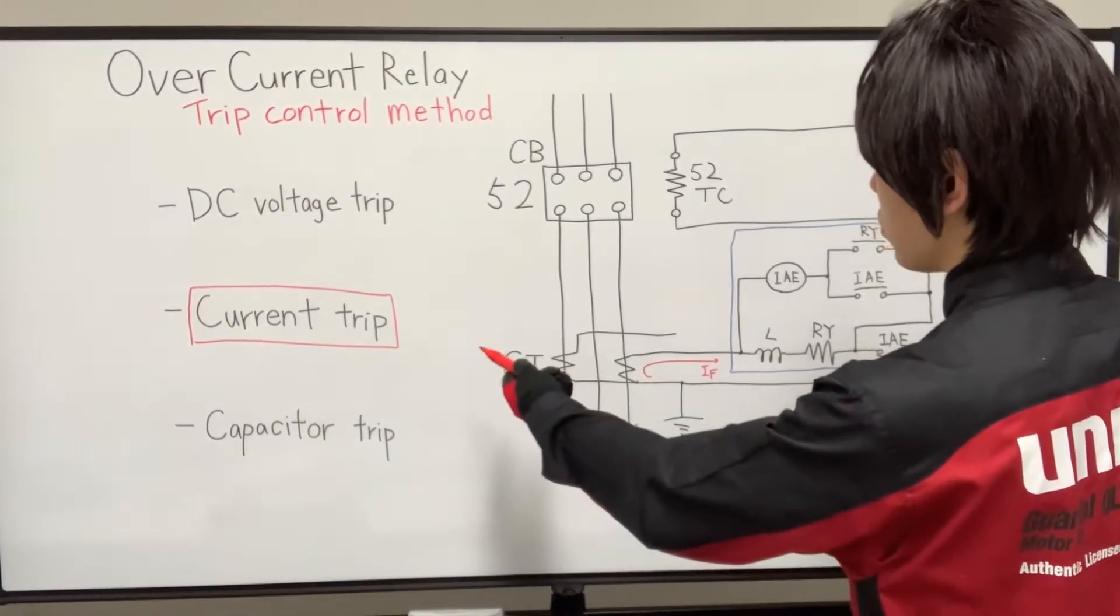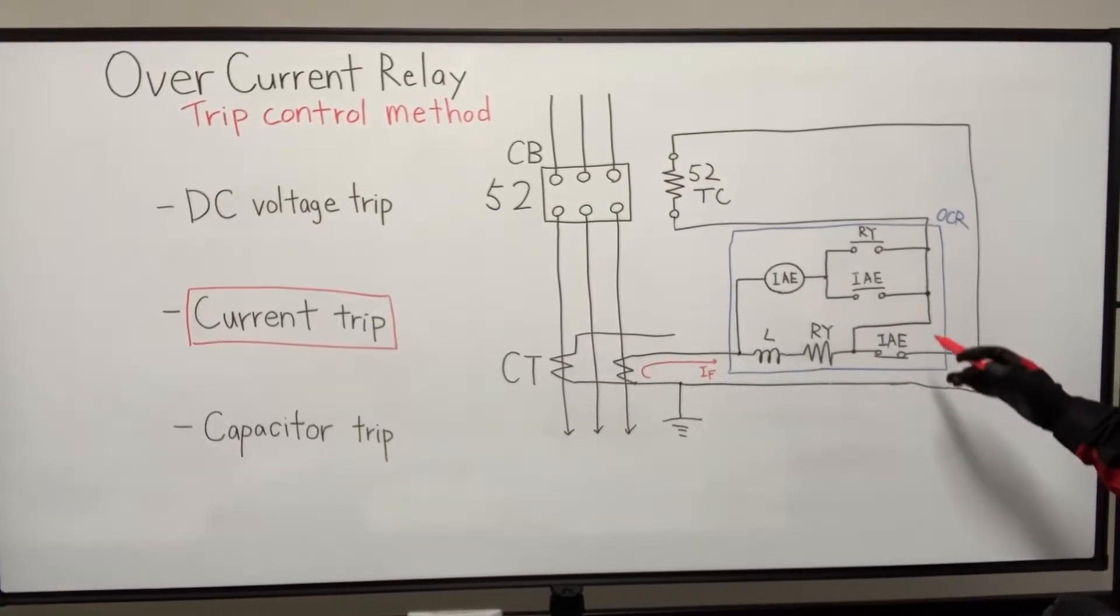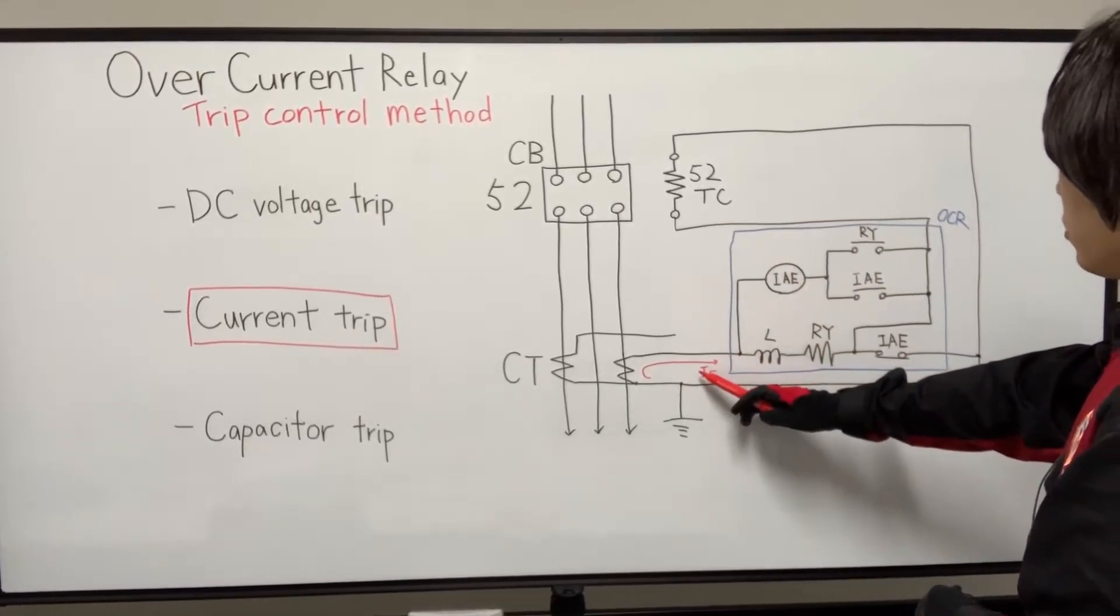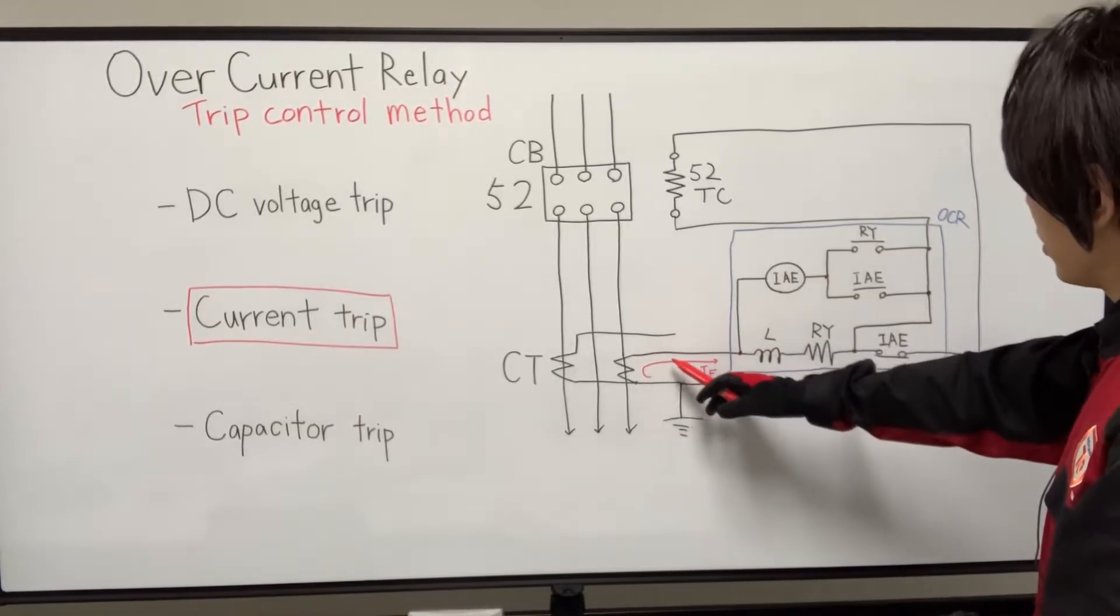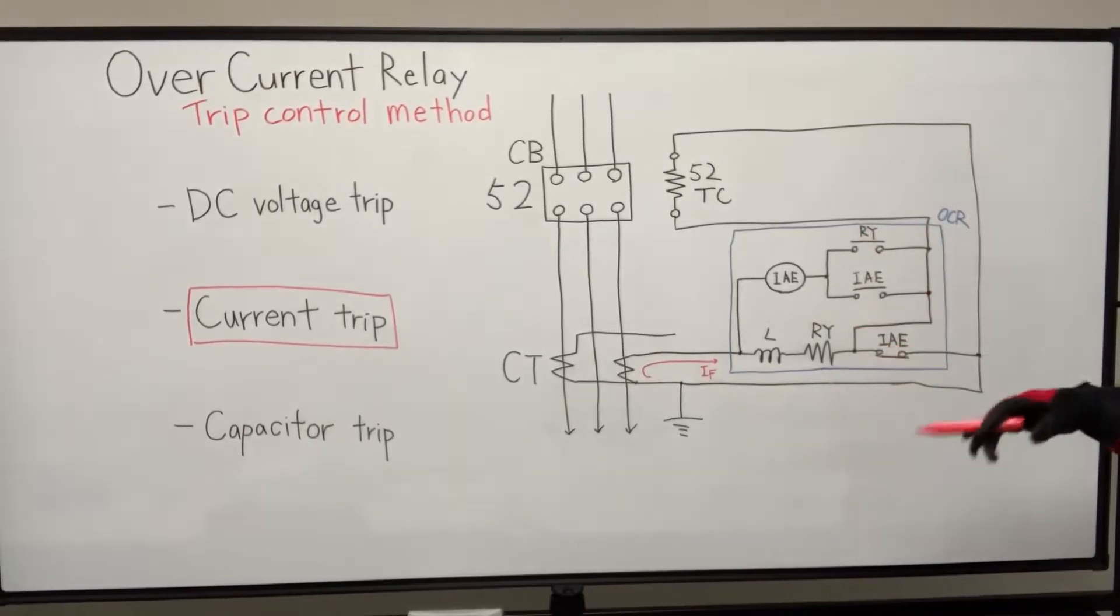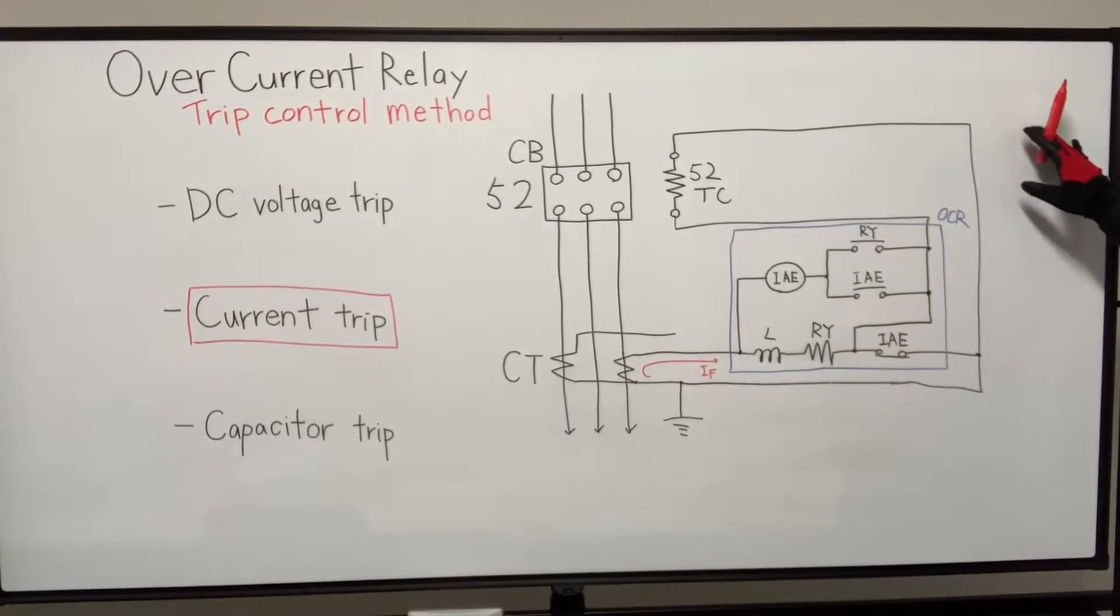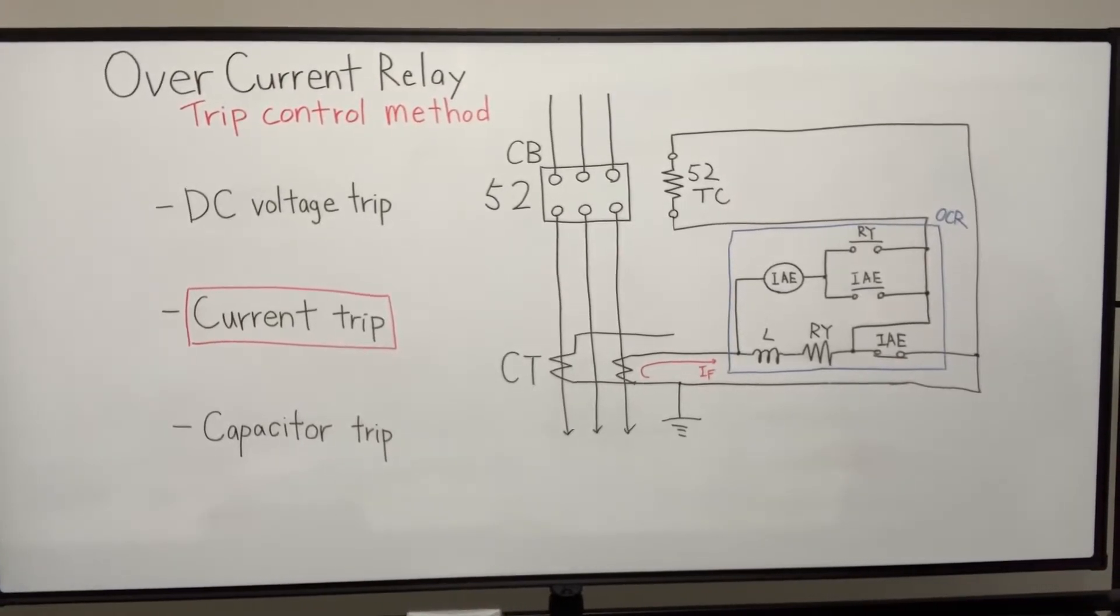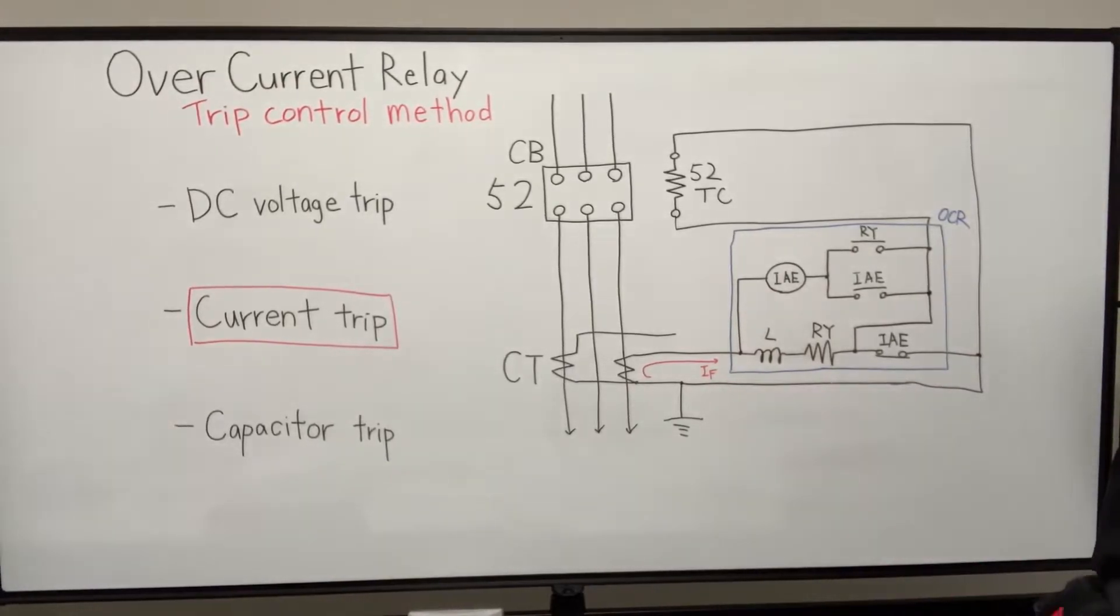The current trip method. In this method, the trigger for the trip is the current which is flowing in the CT's secondary side itself. So this method don't require any extra external power supply, like DC supply or something. They use the secondary side current itself.